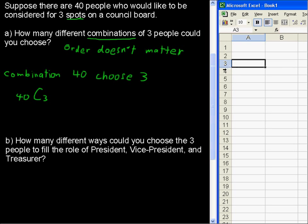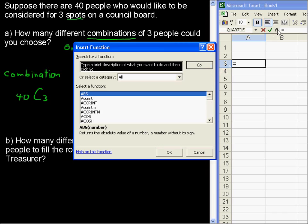The command in Excel for getting a combination is equals COMBIN. I'm going to find it here on the function, just in case, let's say you forget, just to remind you that if you forget what the exact command is, then you can always use the insert function key or button, and then you can find it.